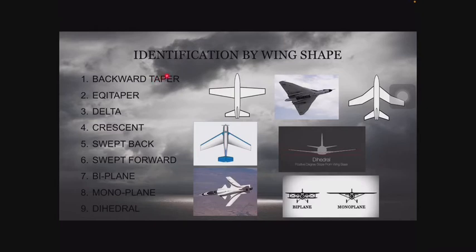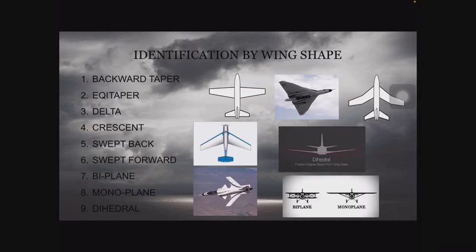Next comes identification of aircraft by the shape of the wing. There are nine main methods to do this, listed here as you can see. This is the backward taper, this is the equi taper, this is the delta shaped wing, and this is the crescent. You can see an example for swept forward over here, one for biplane and monoplane, and this is dihedral.